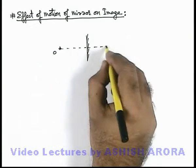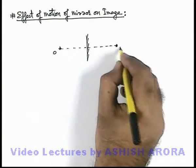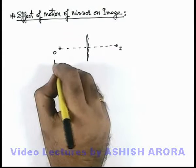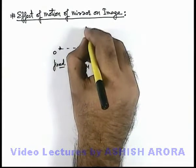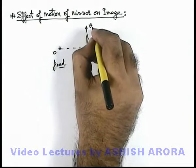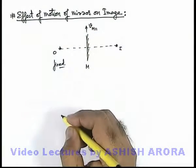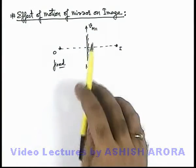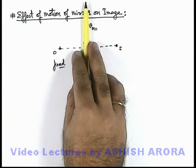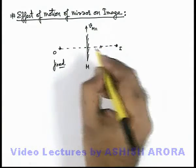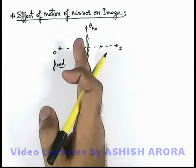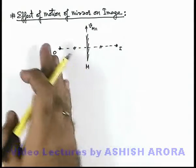And at the same distance behind the object the image will be produced. Say here if object is fixed and this mirror starts moving parallel to itself with the velocity v-m parallel, then we can see if mirror moves parallel to itself it will not affect the position of image because it should always be at the same distance behind the line of mirror at which the object is placed.